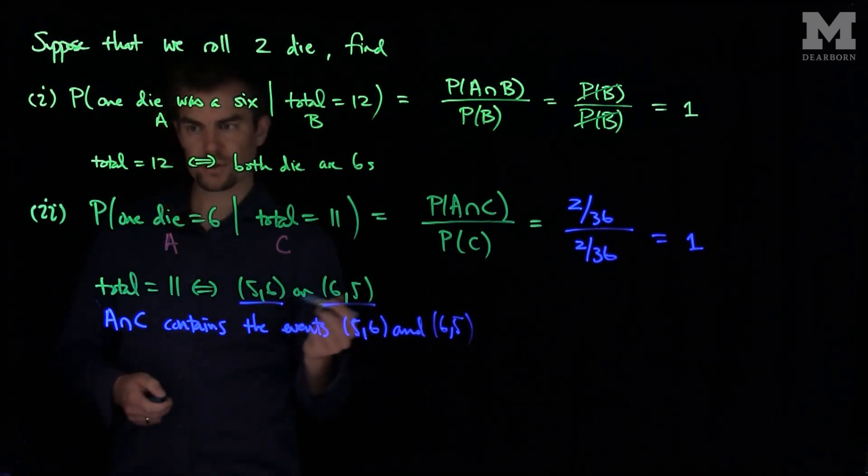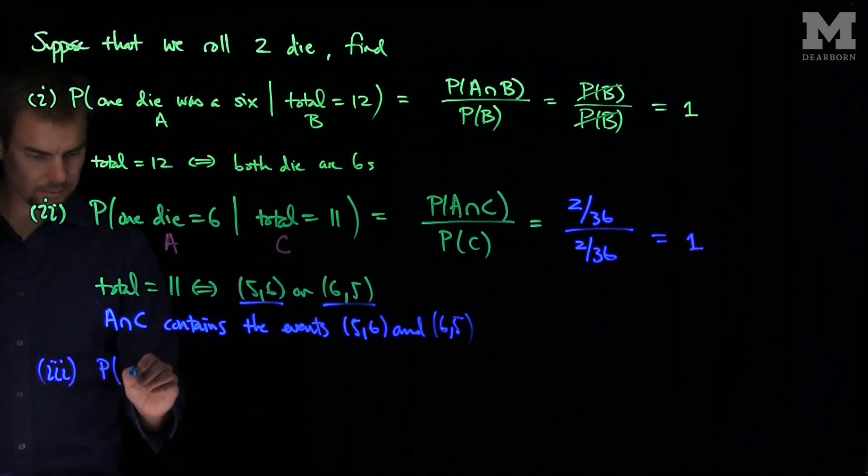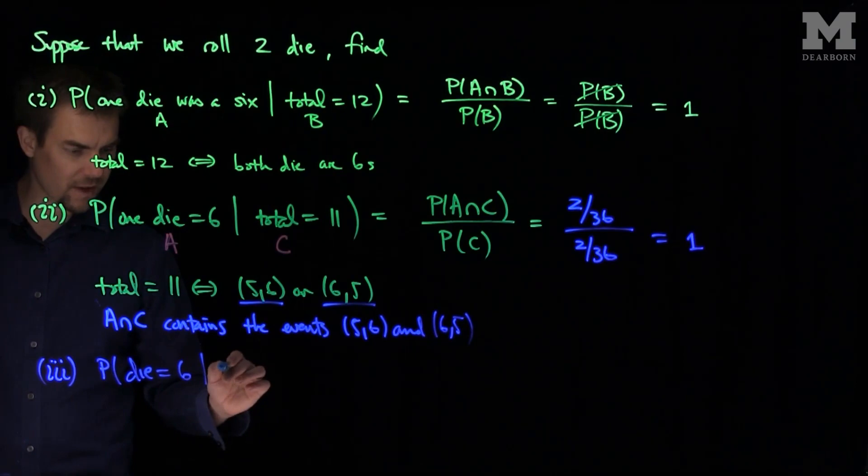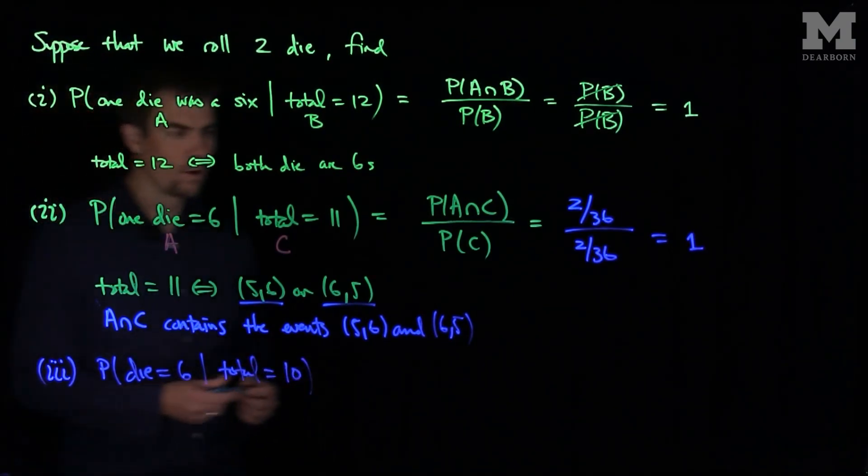Now, if we have a more complex situation, like this one, if I said, what's the probability that a die is equal to 6, given that the total is equal to 10?